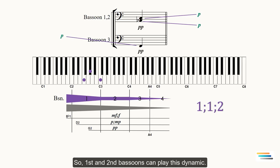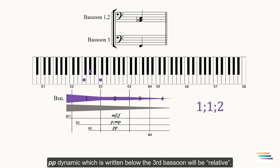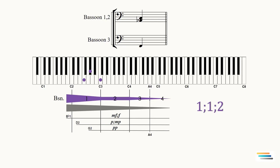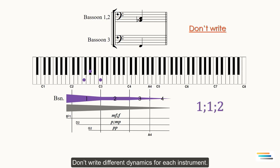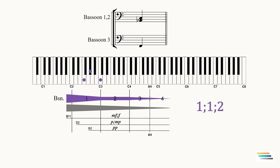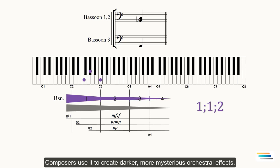So, first and second bassoons can play this dynamic. Hence, we can call it as true dynamic. Pianissimo dynamic which is written below the third bassoon will be relative. Don't write different dynamics for each instrument. I want to remind one more point that the close part harmony in low register is unwishy as they have more chaotic sound. Composers use it to create darker, more mysterious orchestral effects.